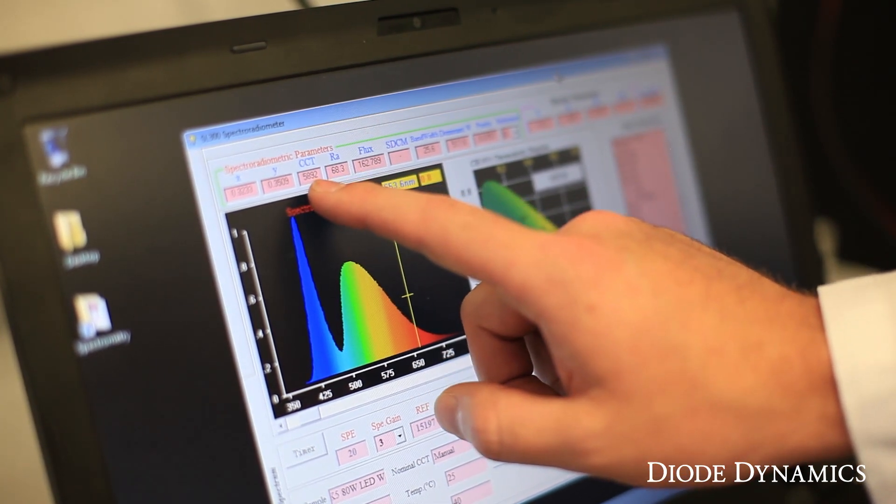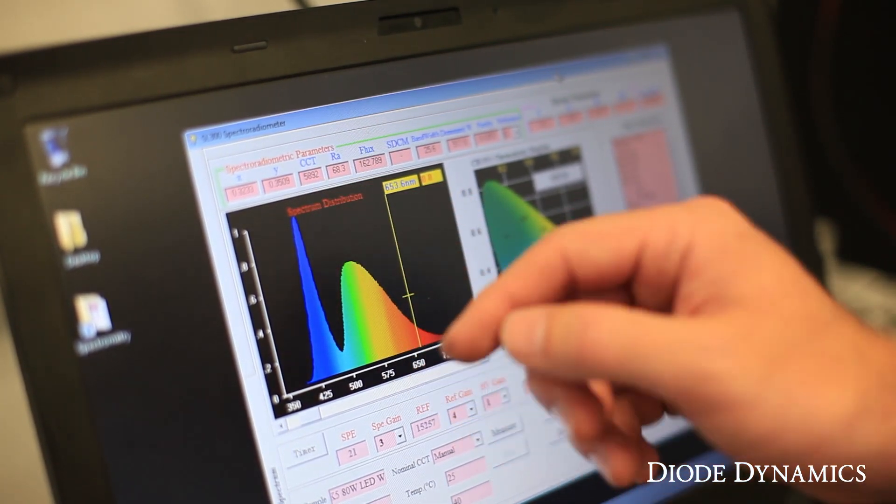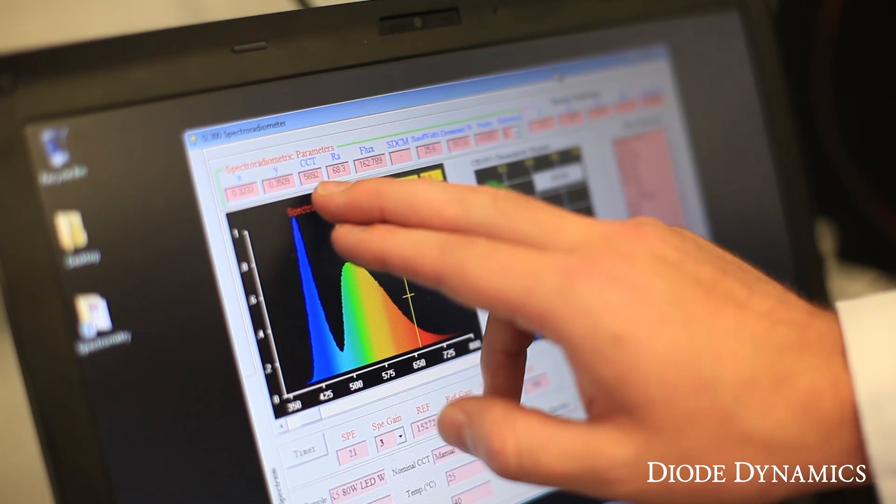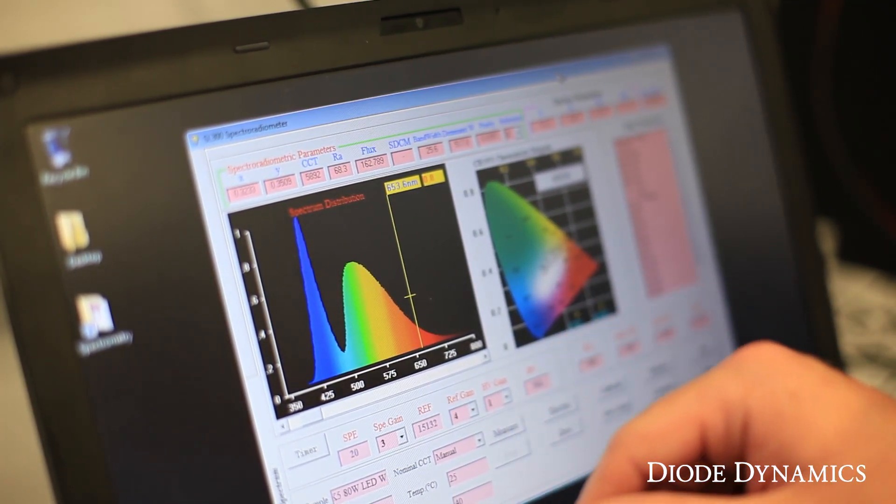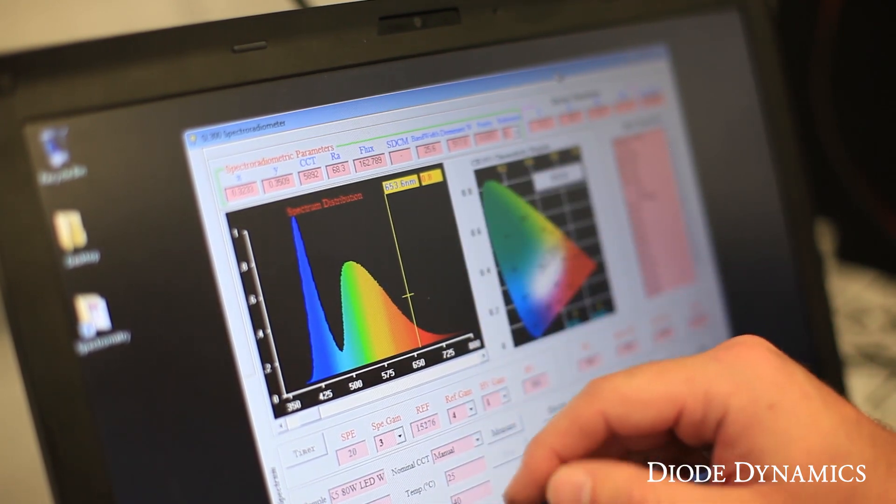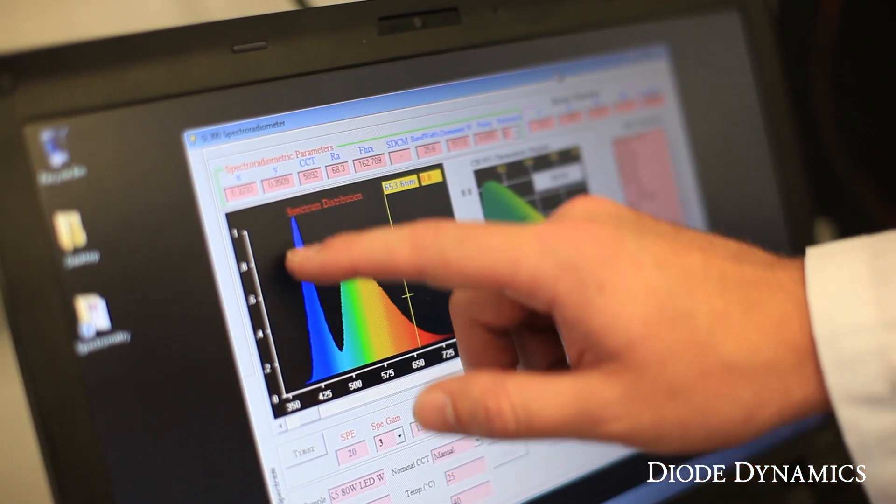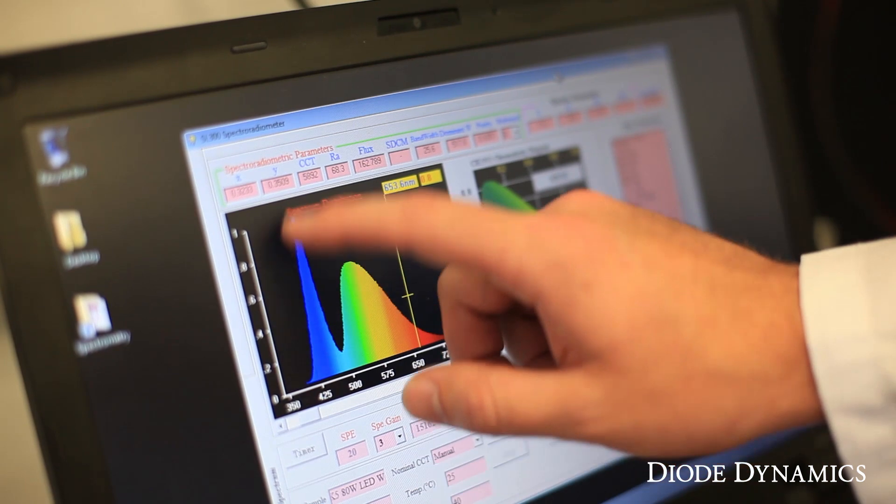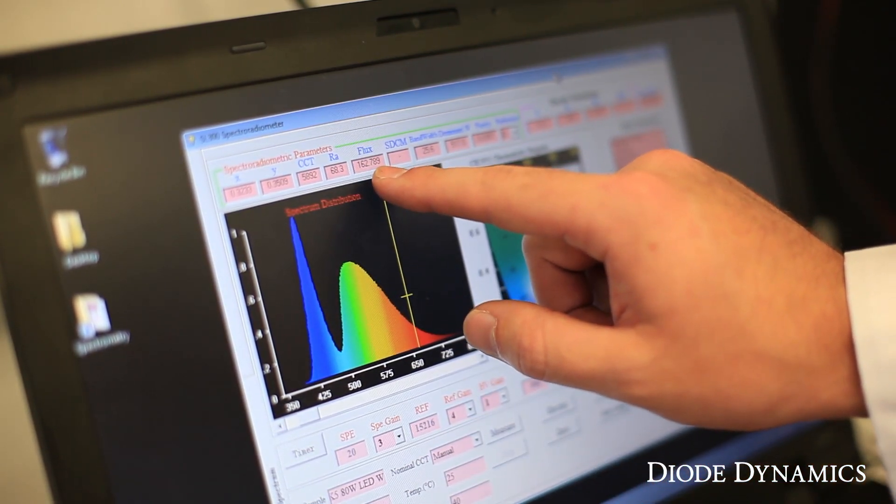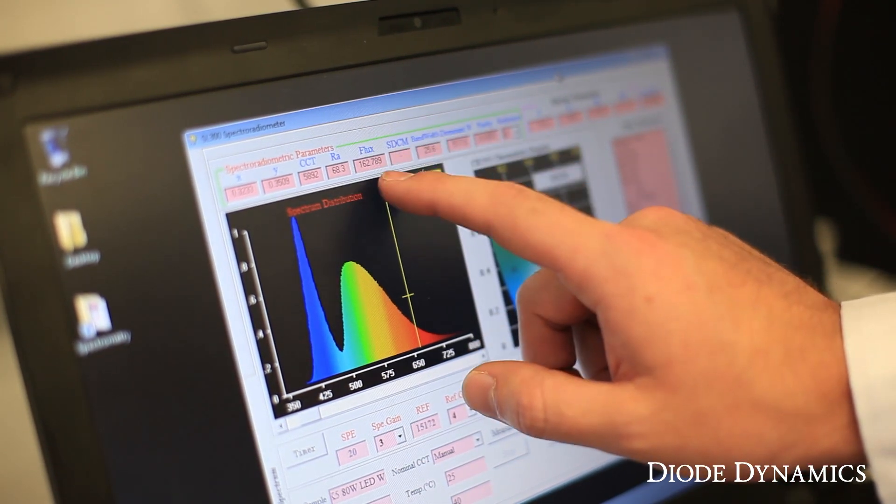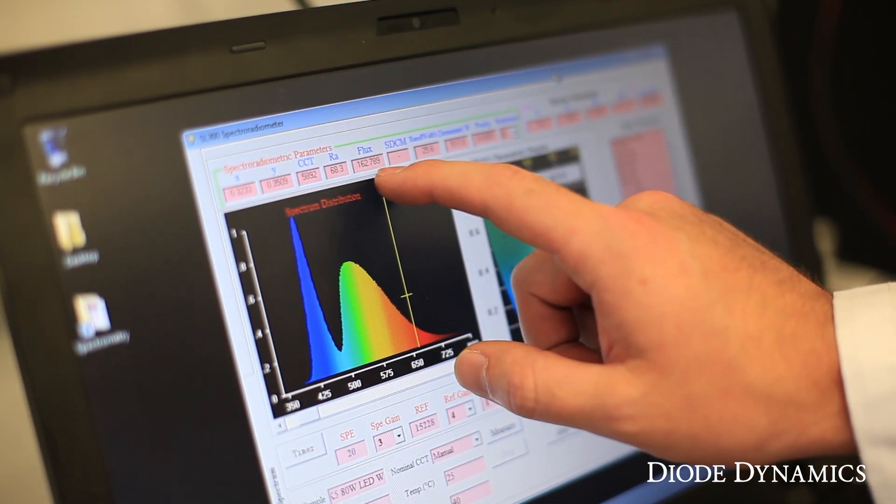So that's how we want to make sure that all of the bulbs from Diode Dynamics are the same color. This is actually one of our competitor's bulbs, an H11 80-watt style bulb, which you might have seen in a previous video. We're just using an example here. By getting the total energy of all of these different colors and combining it, we can get our total flux number, which is measured in lumens. In this case, we have 163 lumens for this bulb.